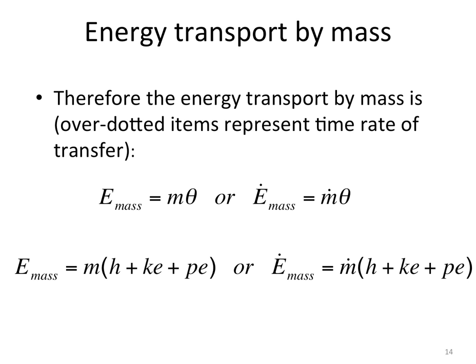We can think of the energy transfer by mass in different perspectives. The extensive energy carried by flowing fluid entering a control volume, if you know the mass of the flowing fluid, is M times theta. If you think of the time rate of energy transport by mass, you need the mass flow rate — that's m-dot times theta, where theta is the energy carried by the flowing fluid on a per unit mass basis. Theta equals enthalpy plus kinetic energy plus potential energy.